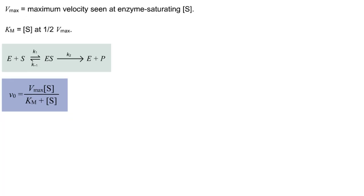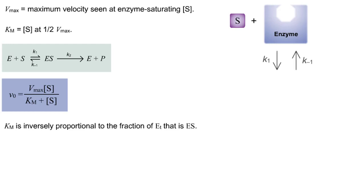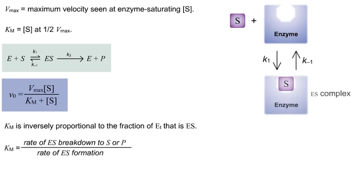For a reaction that follows the Michaelis-Menten kinetic model, the Km is inversely related to the proportion of total enzyme, or ET, which is in complex with substrate. In other words, the higher the Km, the lower the fraction of enzyme with bound substrate.